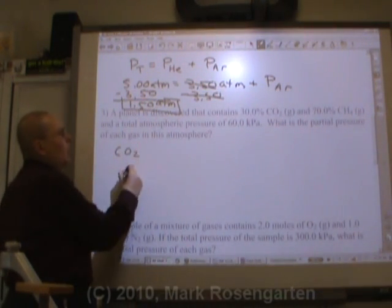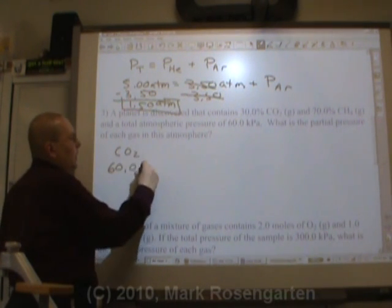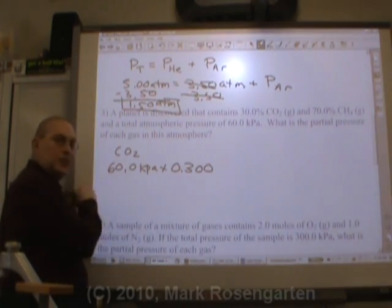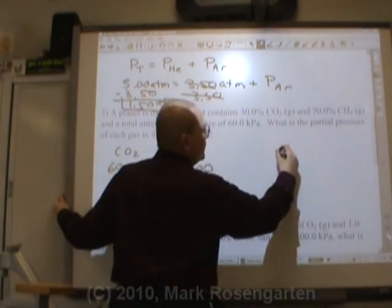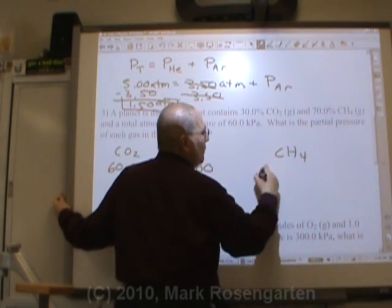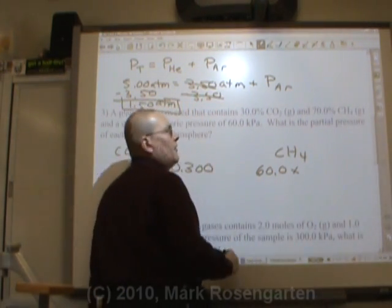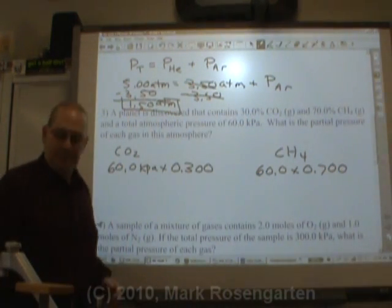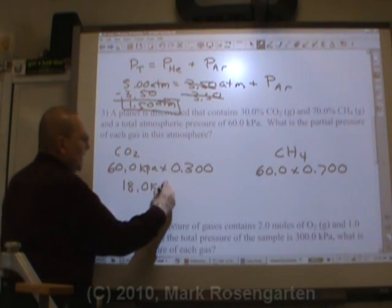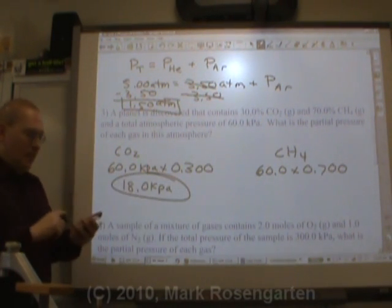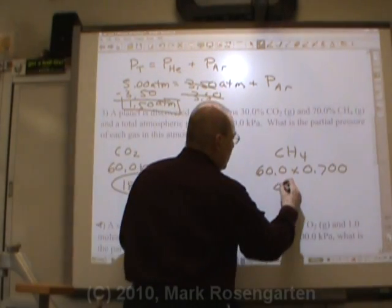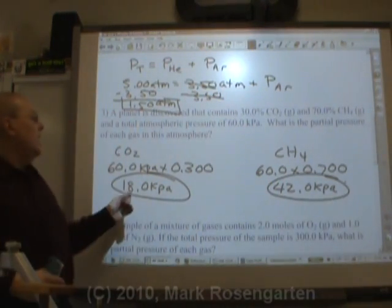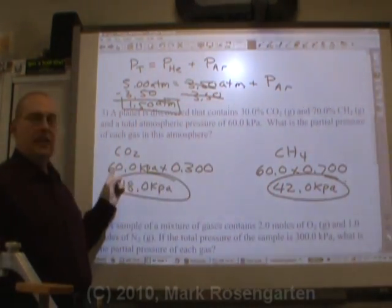So CO2 will be 60.0 kPa times .300. We're just taking a percent, 30% of 60.0. And the CH4 of that 60, 70% or .700 will come from the methane. So 18.0 kilopascals is carbon dioxide, and 42 kilopascals comes from methane. Notice 18 and 42 adds up to 60.